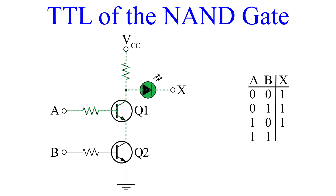Last, we apply a voltage to both A and B. Now both Q1 and Q2 are properly biased. The current flows from collector to emitter in both transistors straight to ground. This turns off the LED, indicating that with inputs A equals 1 and B equals 1, the output is 0.